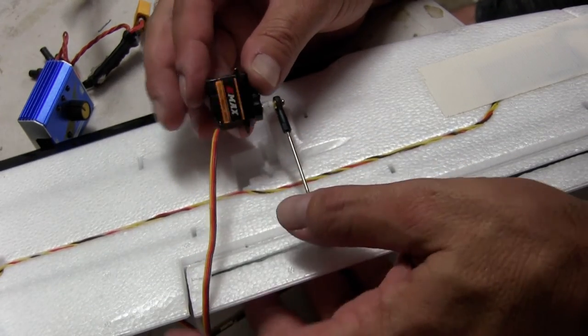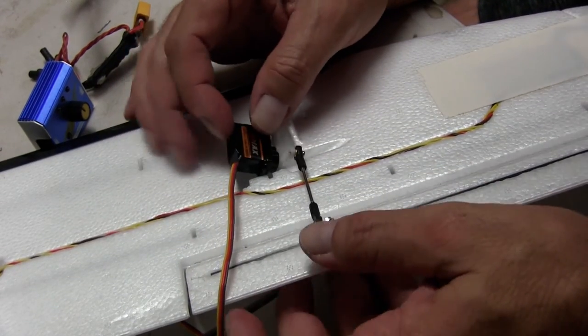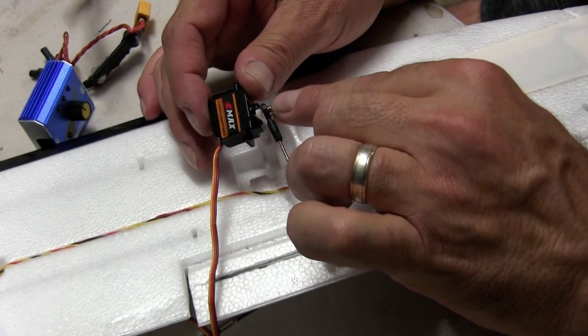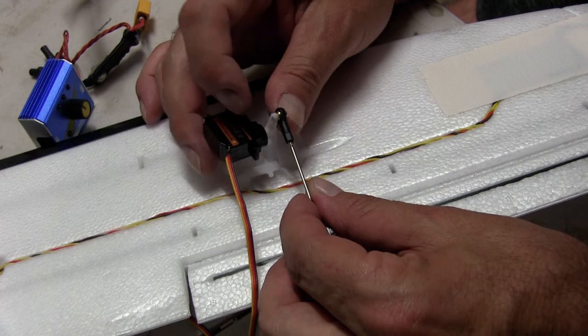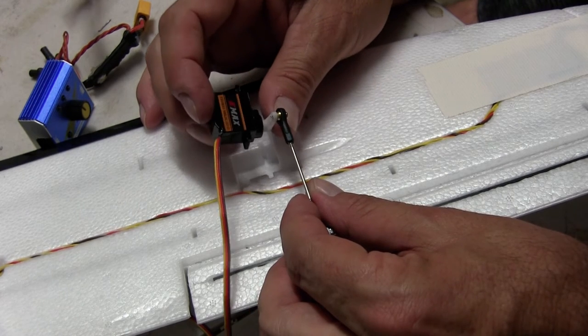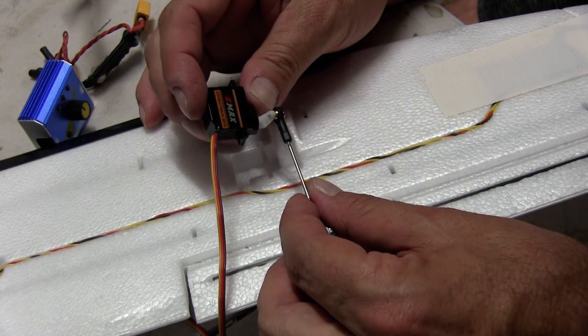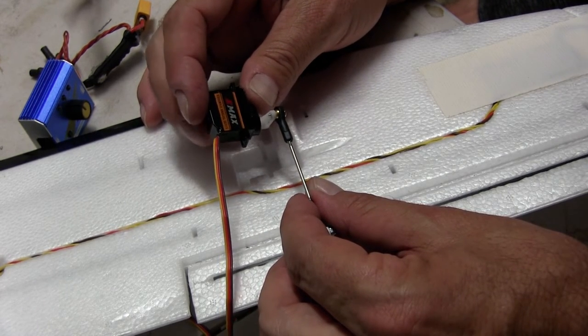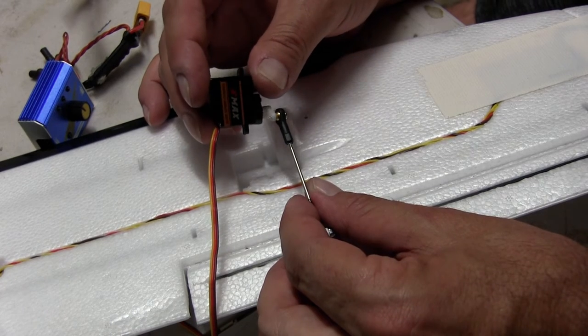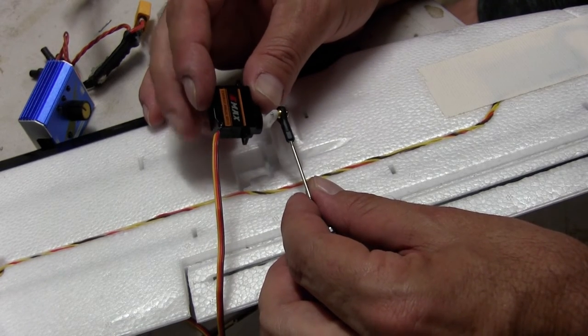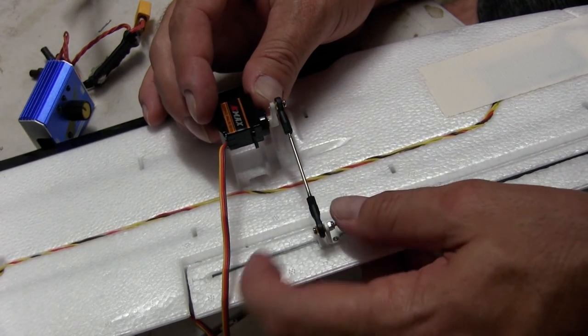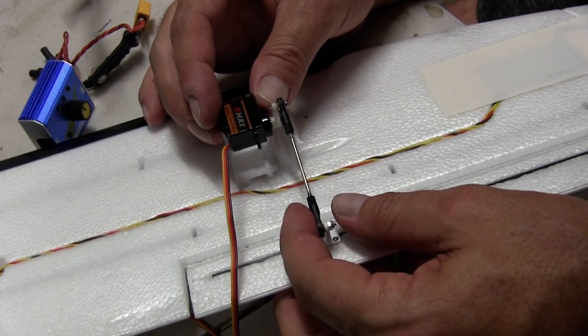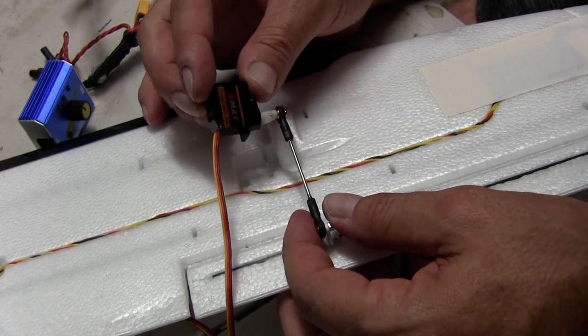So the only thing I'm not real happy with is having one screw just going through into the control horn. Now I'd rather see a bolt and a lock nut on the other side. But the setup's not letting me do that so I might have to try and change this over a period of time that screw could easily work loose. And end up coming out. So I'm going to change that.